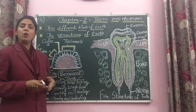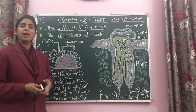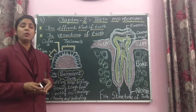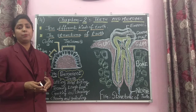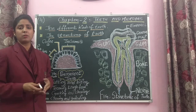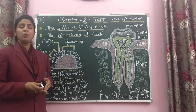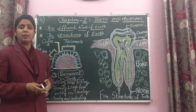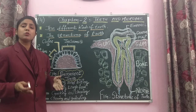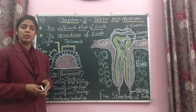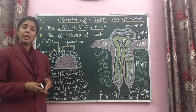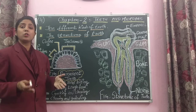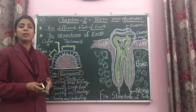A newborn baby does not have any teeth. The first tooth appears in the first 6 months. A 2 to 3 year old baby has a total of 20 primary teeth. These primary teeth are also called milk teeth.